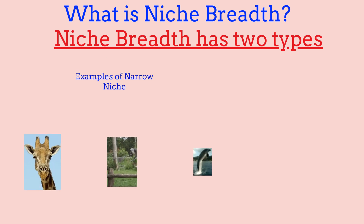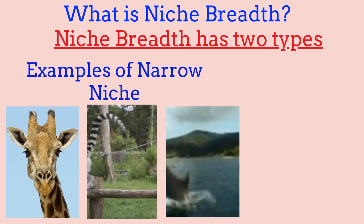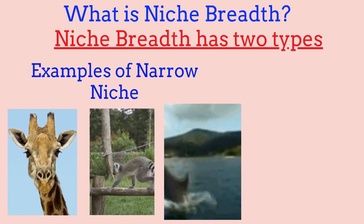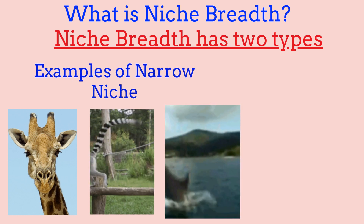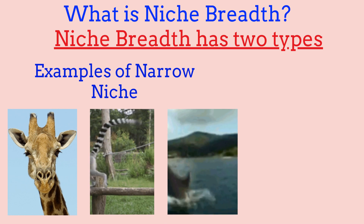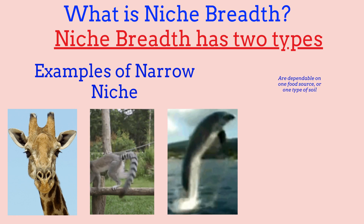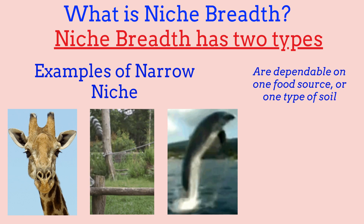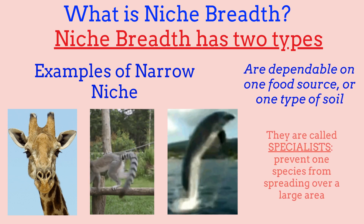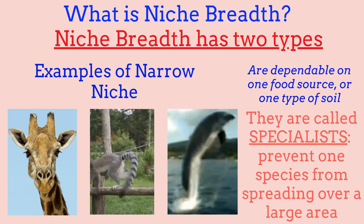Some examples of narrow niches are giraffes, lemurs, dolphins, and most plants. A narrow niche uses a less varied range of resources. In the tropics, temperatures and food supplies are relatively stable, and plants and animals tend to have narrow niches with adaptations directed toward competing for one dependable food source or one type of soil. Organisms in a narrow niche are called specialists because they inhabit a single area.